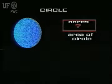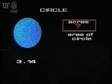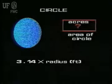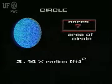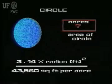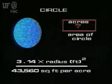We can determine the area of a circle by the equation: area of a circle in acres equals 3.14 — which is a constant we always use — times the radius squared, which means multiplying the radius times itself. Then we divide this quantity by 43,560 square feet per acre.